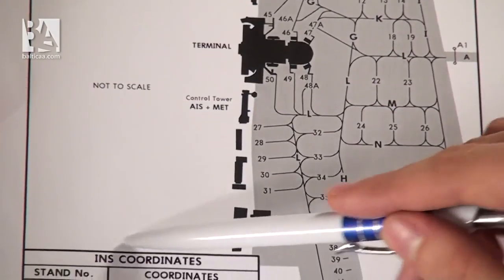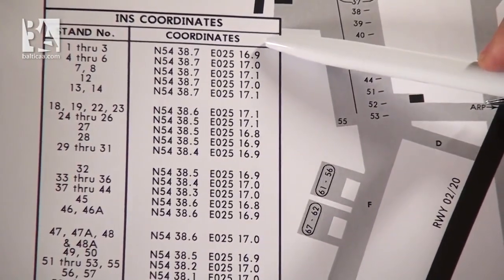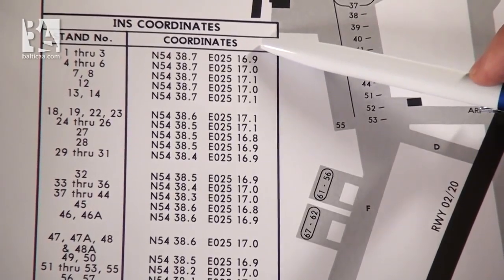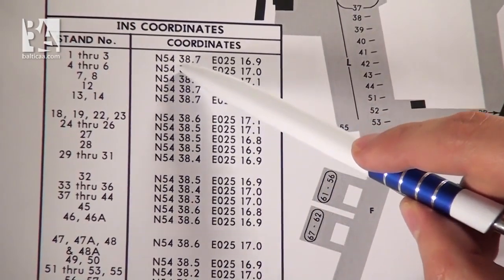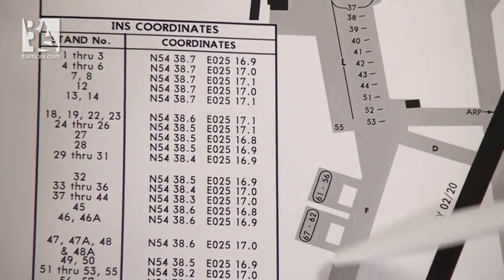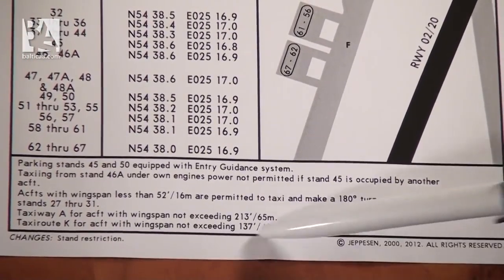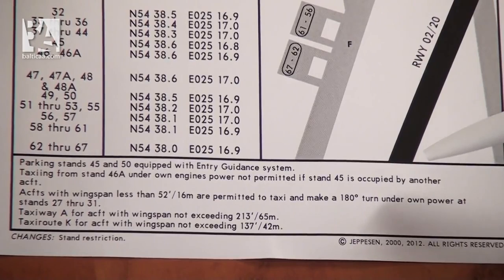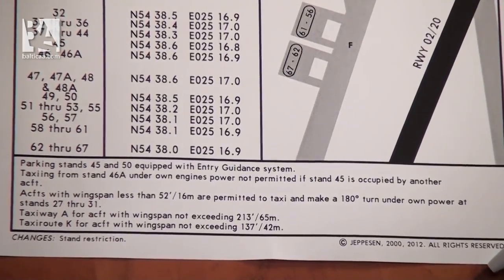In the lower left part of the chart we have a large table for INS coordinates. This would be used for IRS or INS alignment for the aircraft according to their stand positions. For example, for stands 1 through 3 we have coordinates North 54°38.7' and East 25°16.9', and so on. At the bottom of the chart there is additional information about which stands are equipped with entry guiding system, that taxiing from stand 46A under one engine power is not permitted, and other information associated with parking and taxiing in the terminal area.